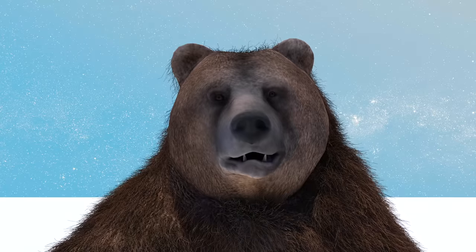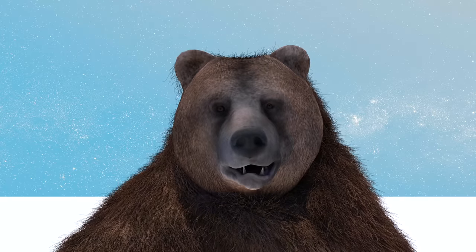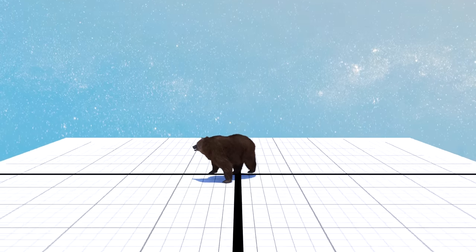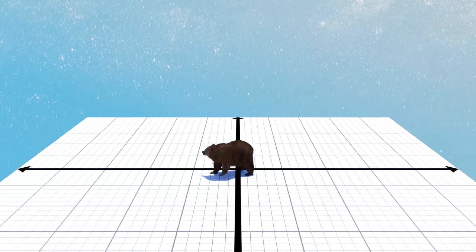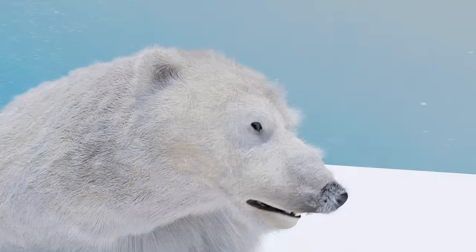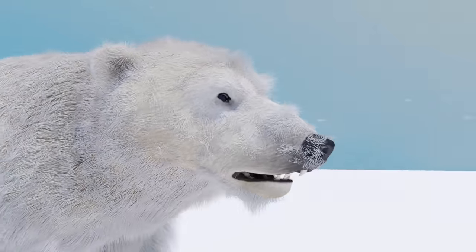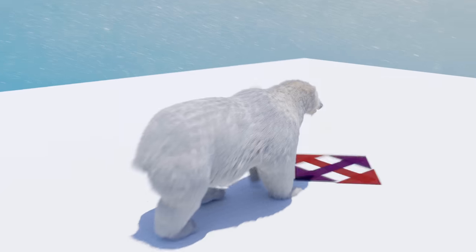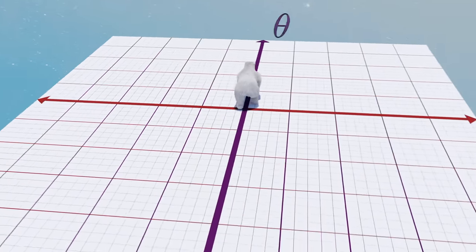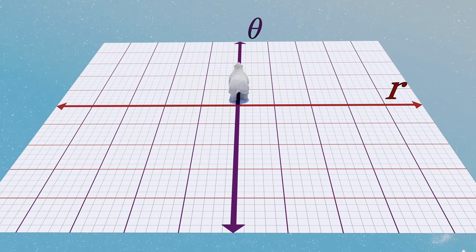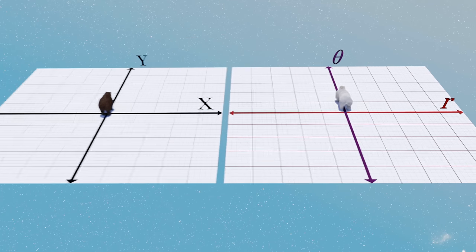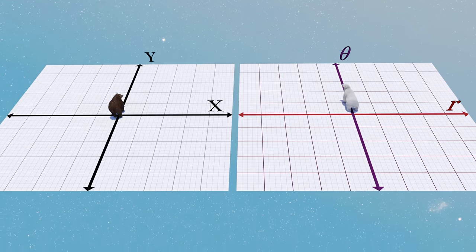This is Cartesian Bear. He lives in Cartesian Land, where lines are all straight and intersect at right angles. This is Polar Bear. He lives in Polar Land, where lines are all straight and intersect at right angles. Aren't these two lands exactly the same thing?